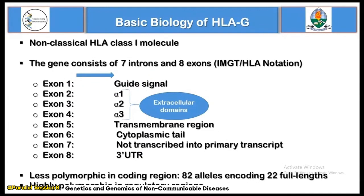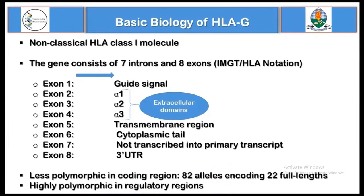While the genes for classical HLA molecules are highly polymorphic in the coding region, the HLA-G gene is less polymorphic there — currently only 82 alleles including 22 full-length transcripts are known. However, the HLA-G gene is highly polymorphic in its regulatory regions, both the upstream regulatory region and the untranslated region, and all these polymorphisms can affect the expression level of the HLA-G molecule.